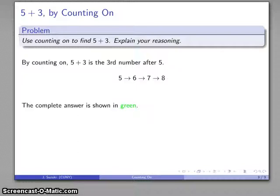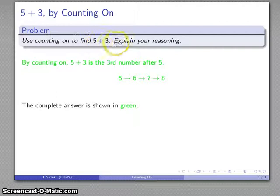And my complete answer to this question is going to be shown in green. I have indicated use the specific method, I've explained what my reasoning is, and my reasoning leads me to first, second, third number after five: eight is the answer.